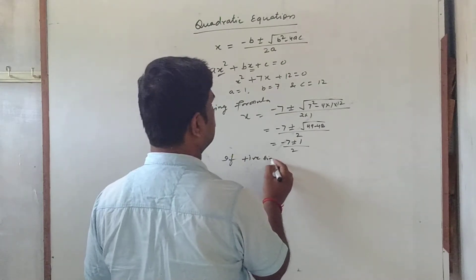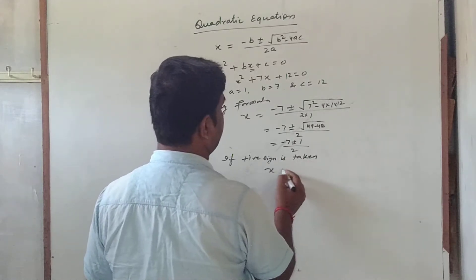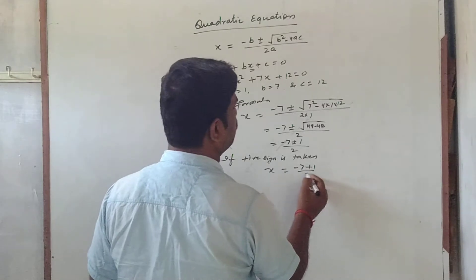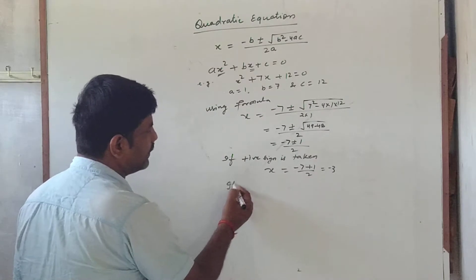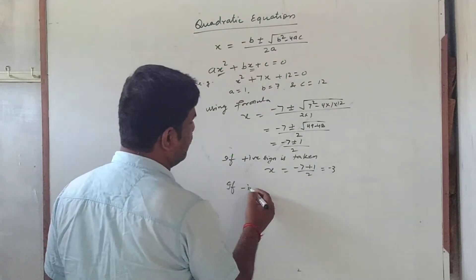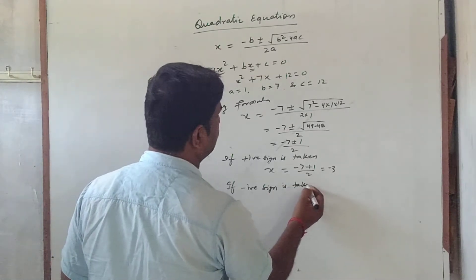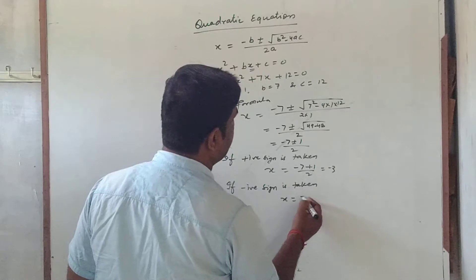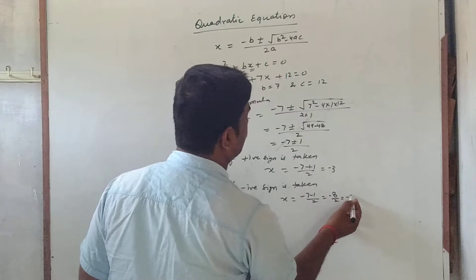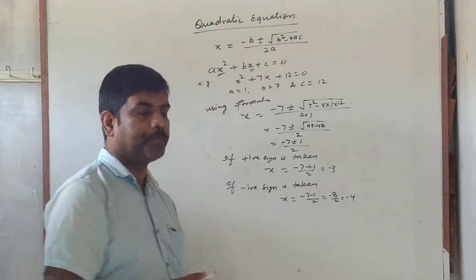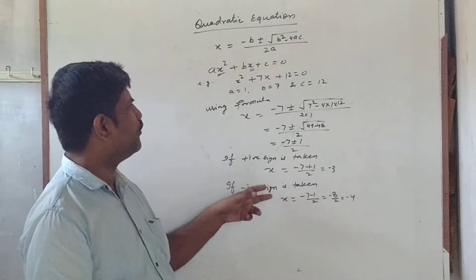So if we take the positive sign, x = (-7 + 1) / 2 = -6/2 = -3. And if we take the negative sign, x = (-7 - 1) / 2 = -8/2 = -4. In this way we can find the two values of x.